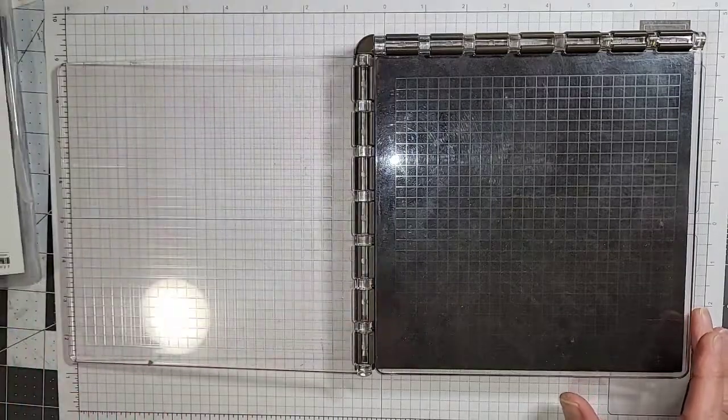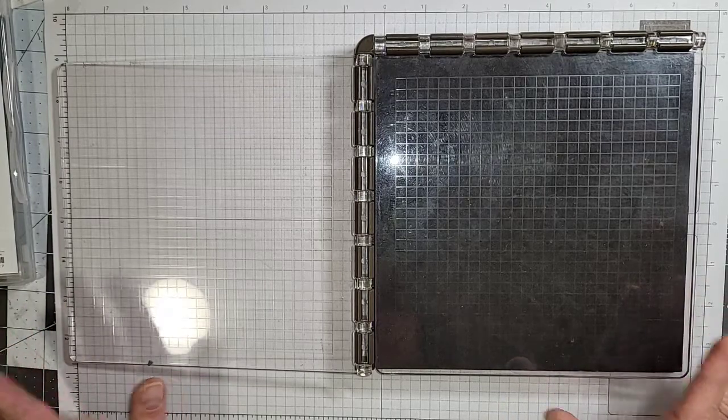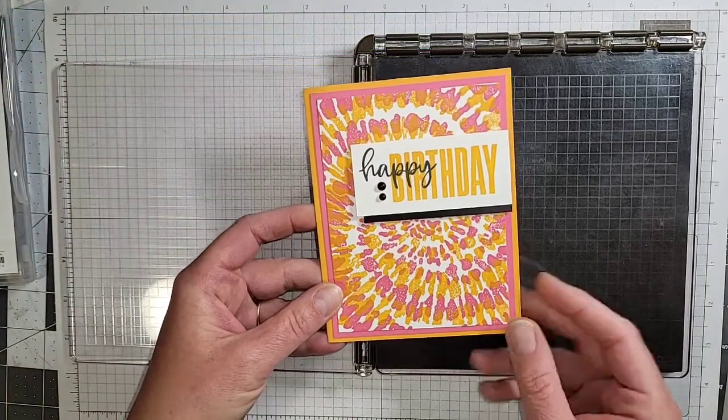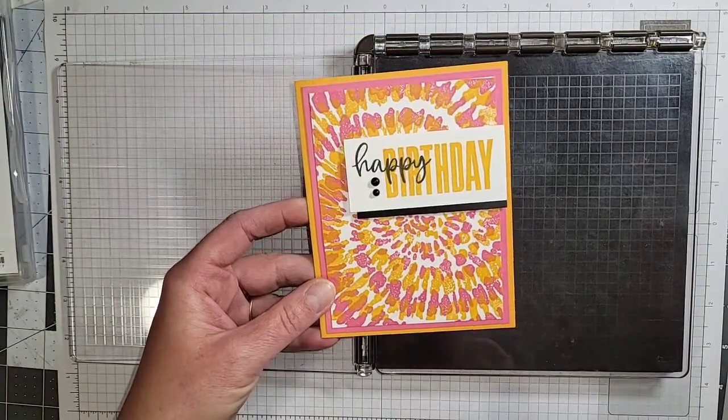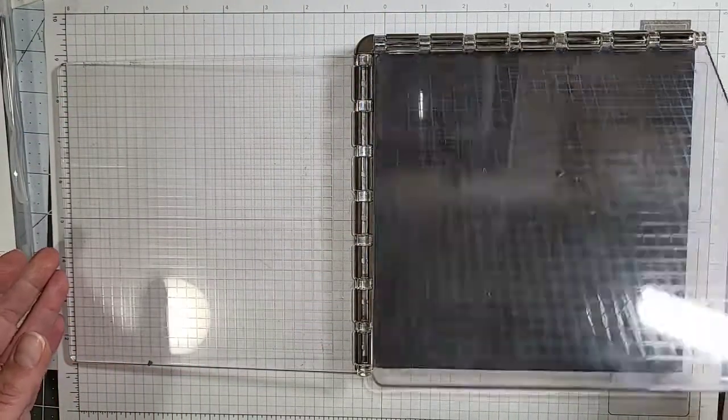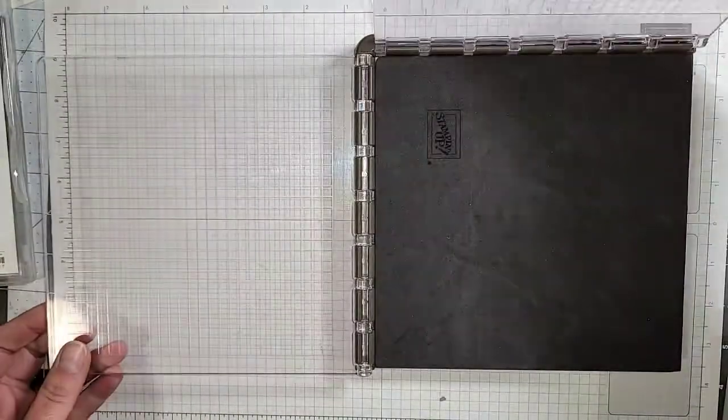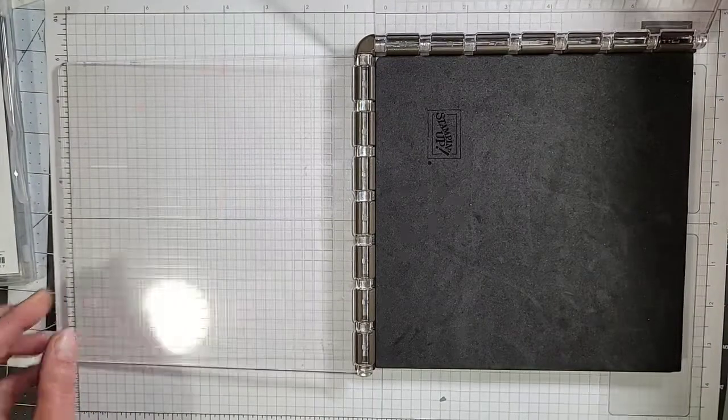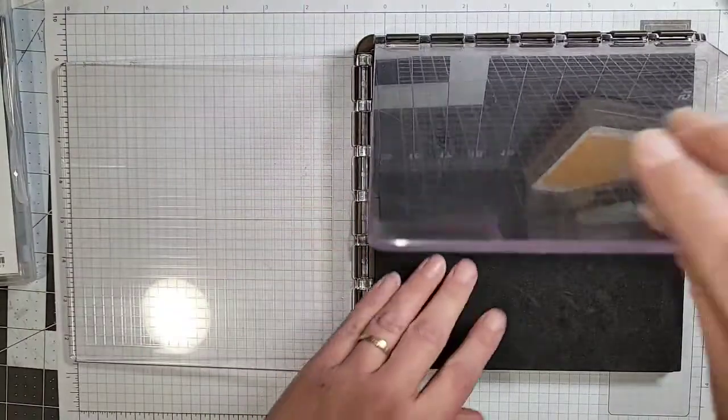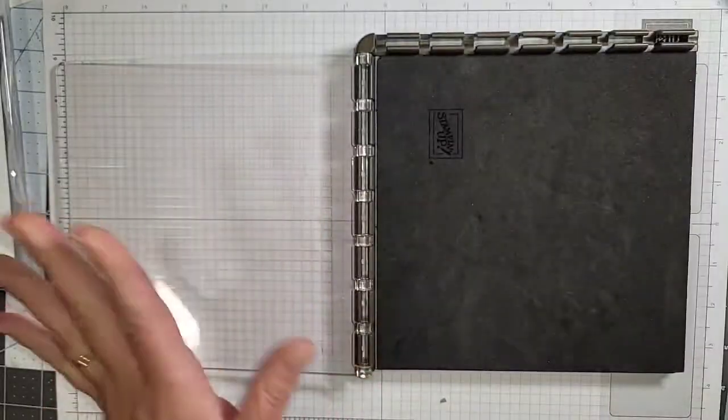Tonight we are going to use the Stamparatus and we're going to make this gorgeous card. Look how bright and fun that is for summer, and it's super simple. So here's my Stamparatus and it has two plates on it. I know it's a little hard to see in my camera but bear with me. So what we're going to do is we're going to take off one. I'm going to remove this one here, it just pops right off.